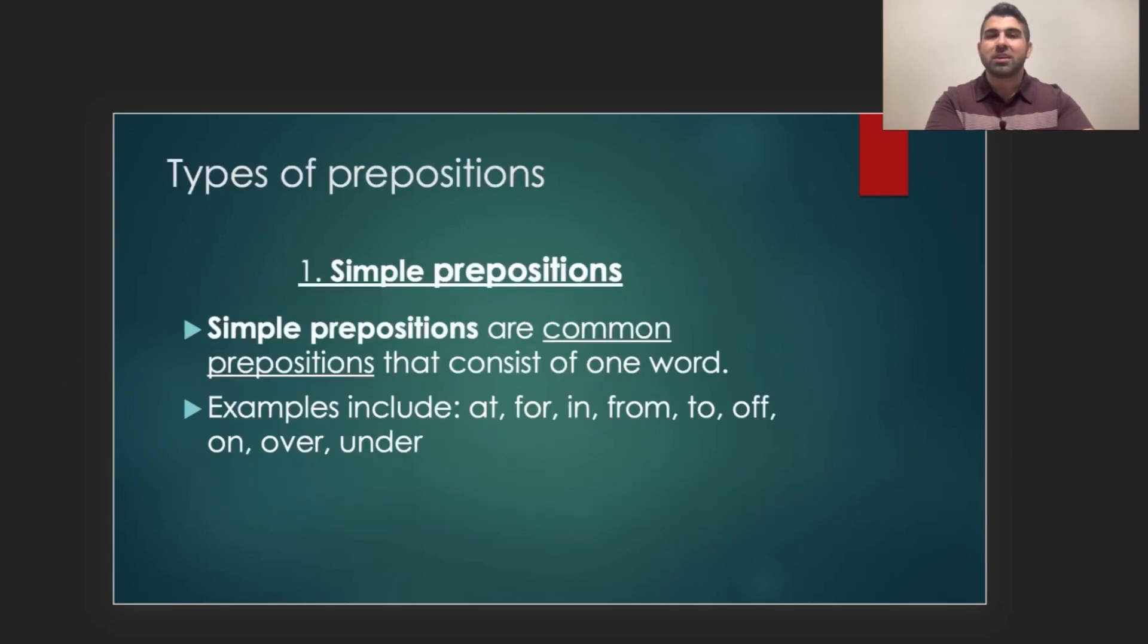There are many different types of prepositions. The first and most common are called simple prepositions, or you can refer to them as common prepositions as well. And these types of prepositions only contain or are only a single word. So, examples include at, for, in, from, to, off, on, over, and under. As I mentioned before, there are many other examples. But, of course, I cannot go through all of them in this video.